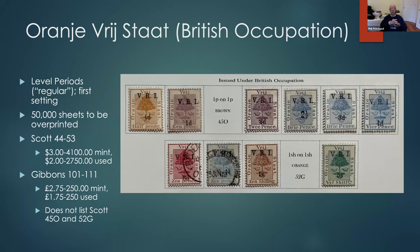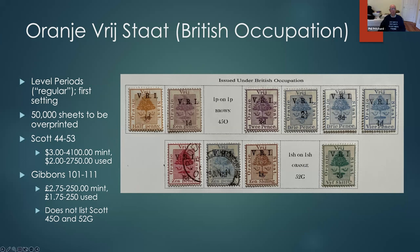This is the start of the British occupation issues printed 'V.R.I.' — Victoria Regina Imperialis. These are the first set in which the periods after V, R, and I are level with the bottom of the letters — this is the first setting. They had 50,000 sheets of stamps to overprint, so it took a long time and they went through whole bunch of variations on the overprint. Scott lists two color varieties — the one penny and the one shilling — that Gibbons does not list, because Gibbons doesn't even believe they're real. Those spots are blank here because those stamps cost multiple thousands of dollars.